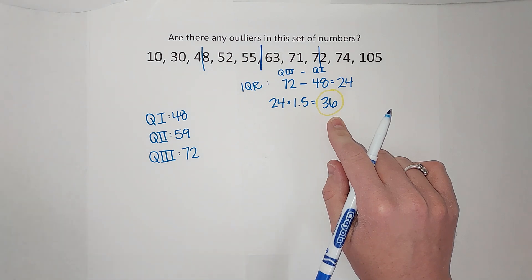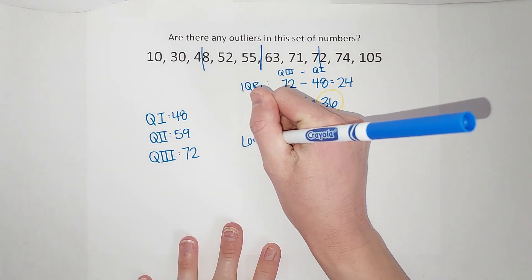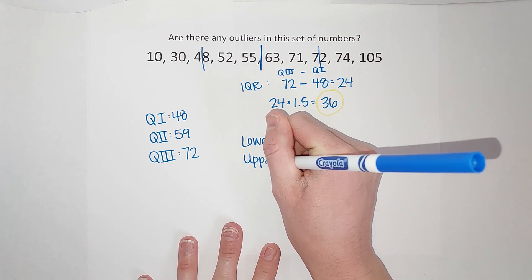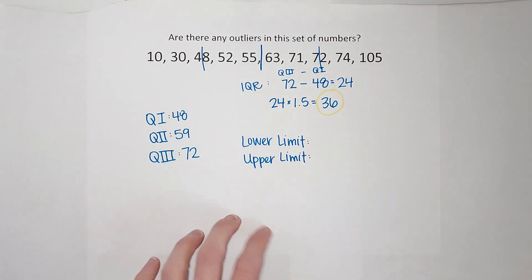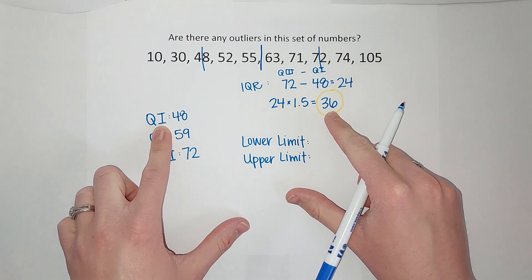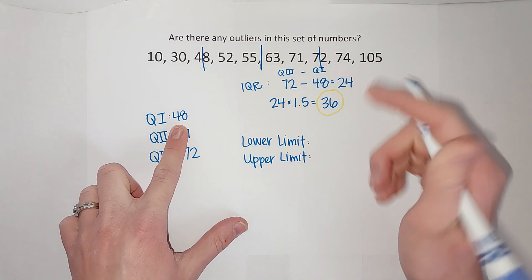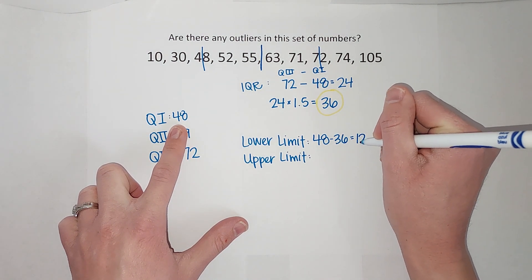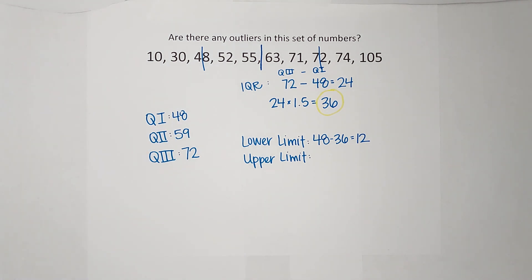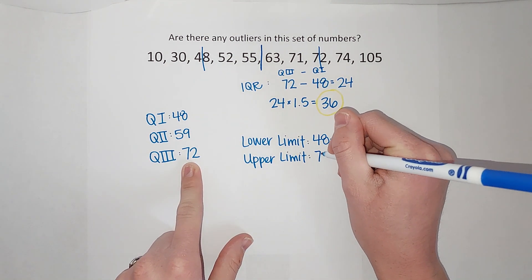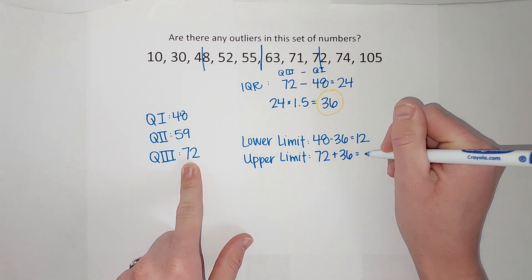What I'm going to do now is find my lower limit and my upper limit. For the lower limit, I take the first quartile and subtract the IQR times 1.5 — that's a bit of a lame name, but there you go. So we take 48 and subtract 36, giving me 12. For the upper limit, we take 72 and add 36, giving me 108.